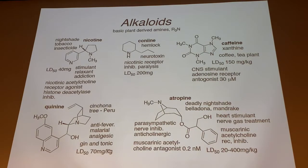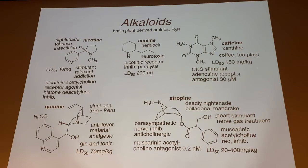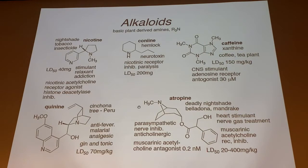Atropine is a heart stimulant used to treat acute cardiac conditions including heart attack; it comes from belladonna (deadly nightshade) or mandrake plant. It hits the muscarinic acetylcholine receptor, as opposed to the nicotinic receptor. If you've had neuroscience, those are the two main receptors in neurons.